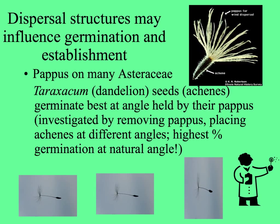A number of seeds — not only wind-dispersed seeds — have dispersal structures: tufts of hairs, little hooks, and so on, that influence germination. In many Asteraceae, plants of the sunflower family, for example the achene or the fruit of a dandelion,